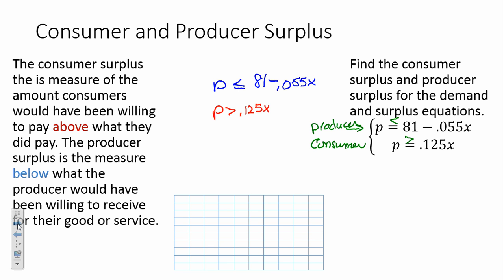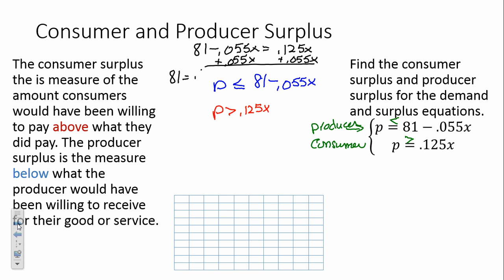How do we find the equilibrium point? Set them equal: 81 minus 0.055X equals 0.125X. Adding 0.055X to both sides: 81 equals 0.125X plus 0.055X, which is 0.18X. Taking 81 divided by 0.18 gives us x equals 450.